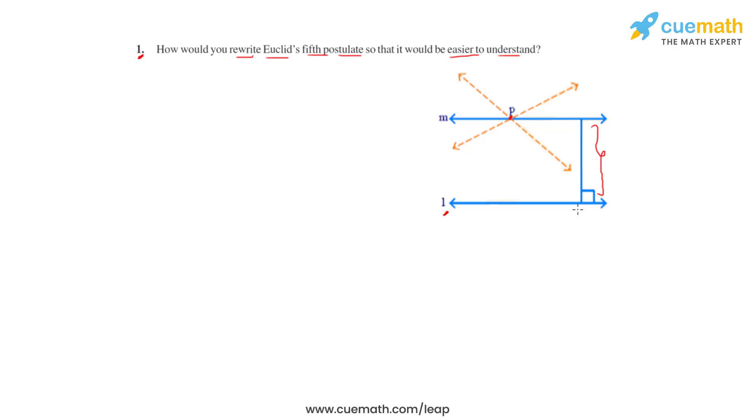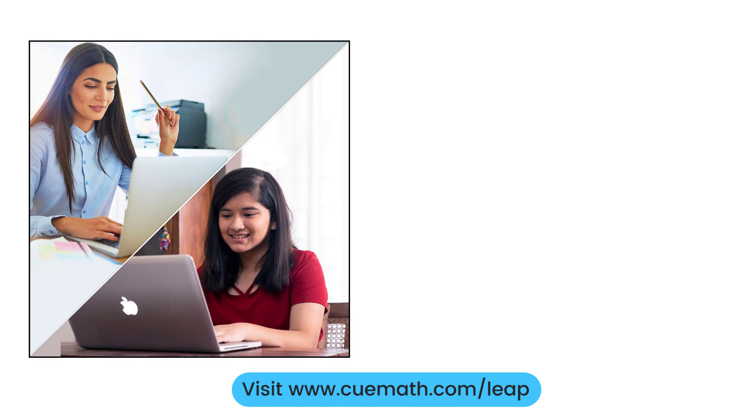Now this result can be put across in another way by saying that two intersecting lines cannot be parallel to the same line, and this is a better way of understanding Euclid's fifth postulate.